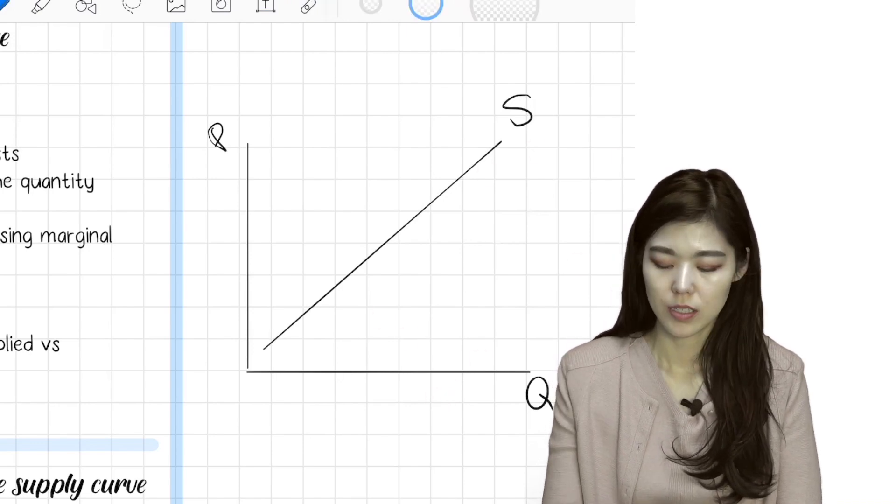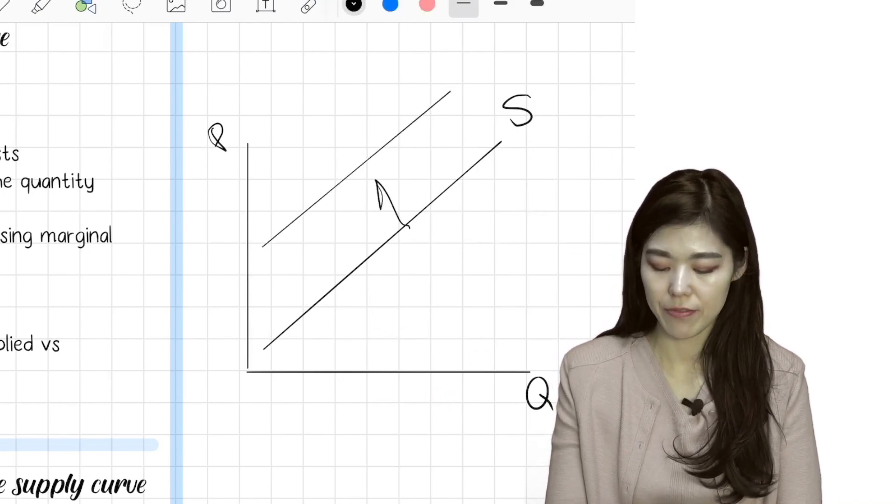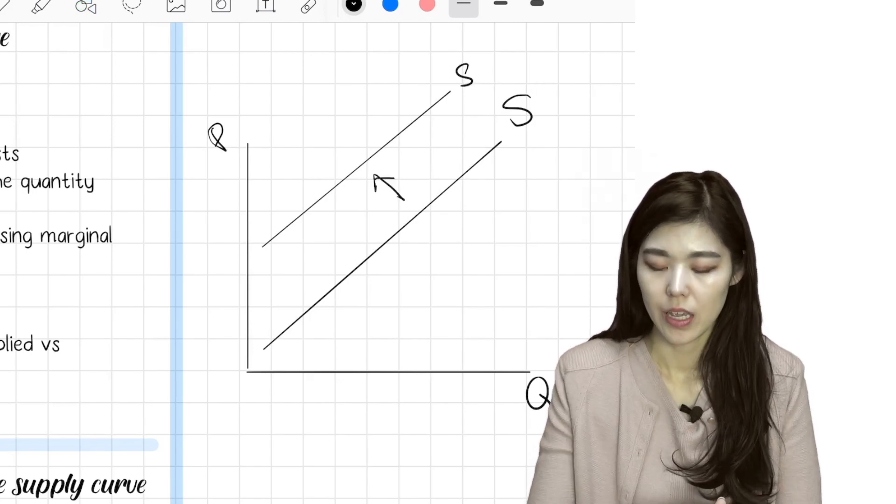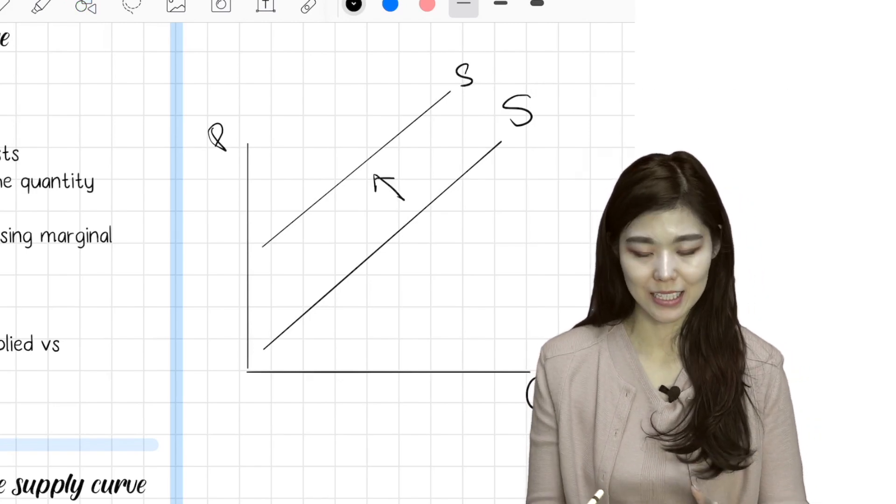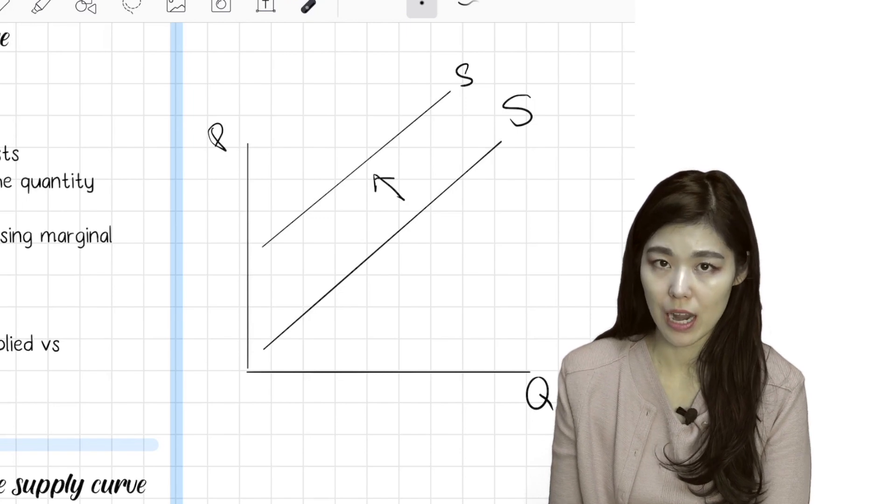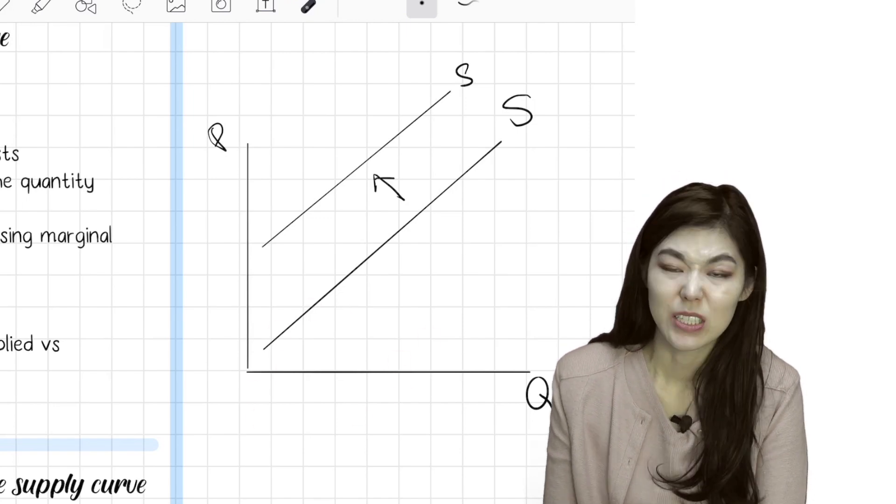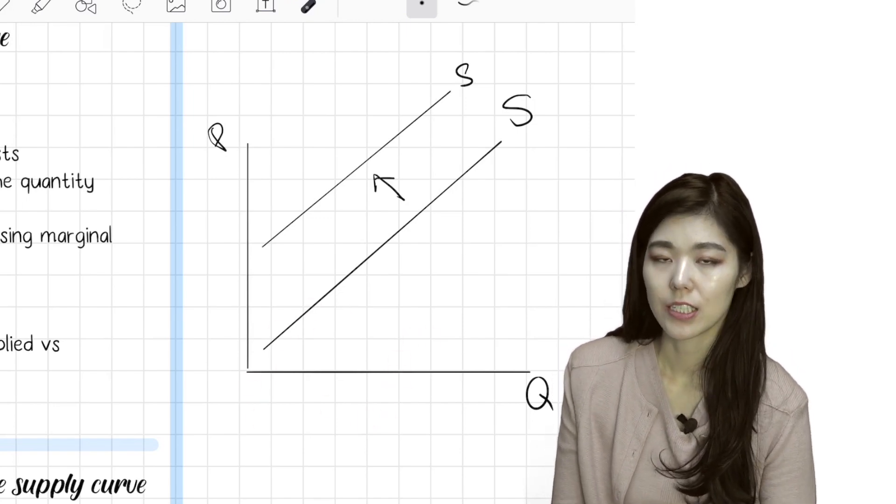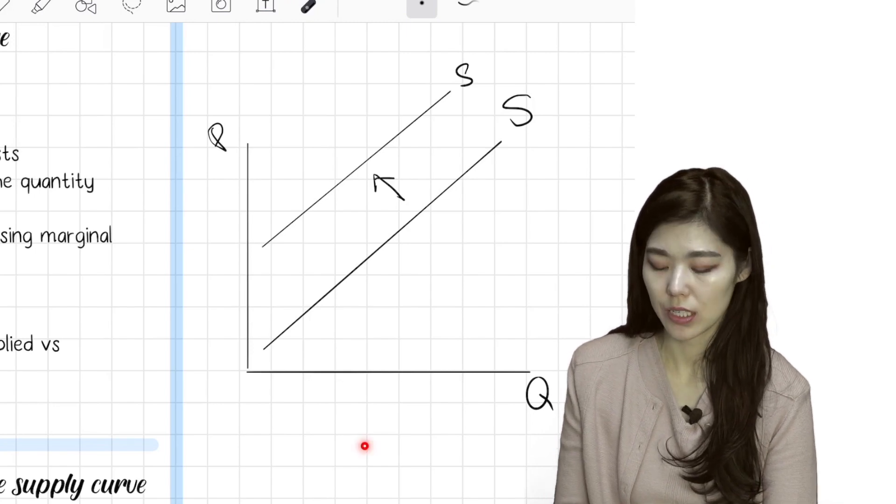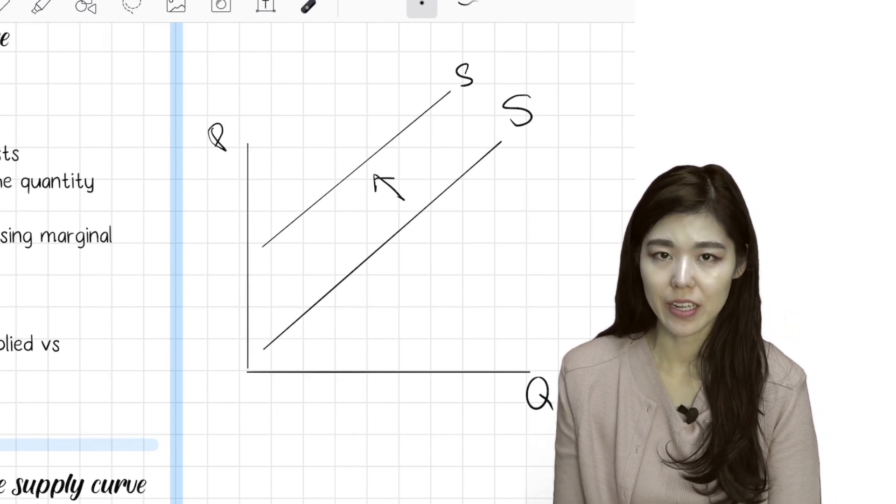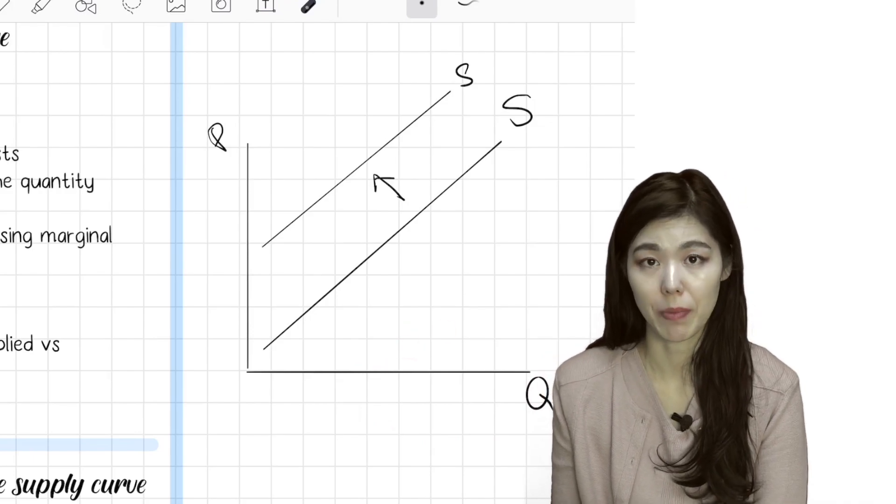Supply shifting to the left like this - it's not upward but left - would mean that they supply less. When the supply curve moves to the left, there is less quantity. So supply shifts to the left means less quantity. Supply shifts to the right means there are more suppliers, more people are supplying.